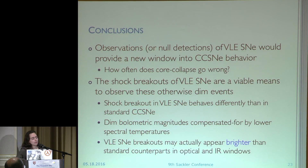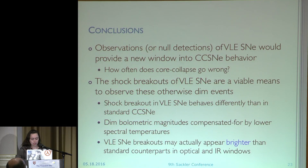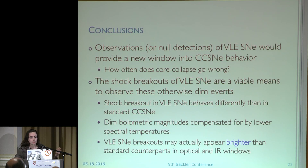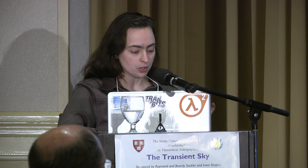To wrap it up: very low energy supernovae are interesting and you should go look for them because they will tell us about core collapse failure. The shock breakouts are a much more viable means to observe them than just looking for the supernovae directly. These breakouts behave differently than standard energy — you have to take into account the lower temperatures. They're dimmer overall, but their lower spectral temperatures mean they actually often end up brighter in the bands you're observing in — they can appear brighter than their standard counterparts, especially in the optical and the IR.